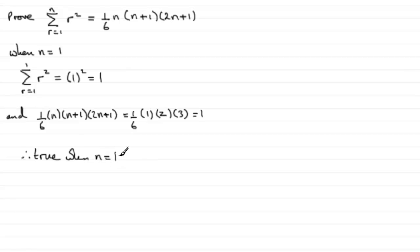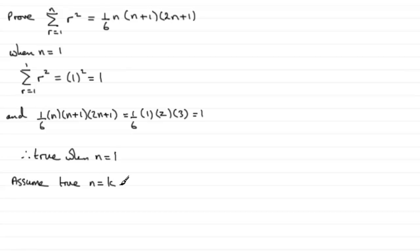We've got one sixth n multiplied by n plus 1 multiplied by 2n plus 1. If we put 1 into that we end up with one sixth multiplied by 1 multiplied by 2 multiplied by 3, and indeed we do get 1. So therefore it's true when n equals 1. Now we need to assume that it's true for some particular value of n.